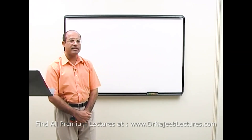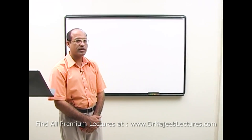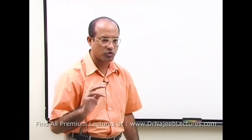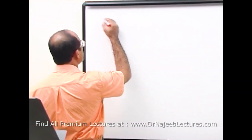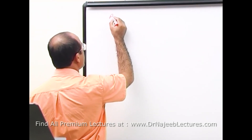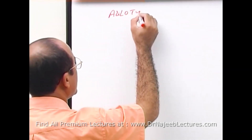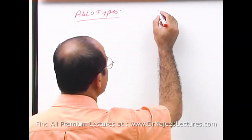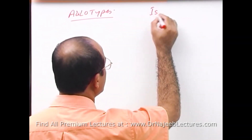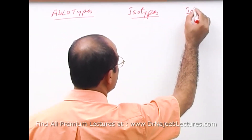Now, we will talk about another way to type the antibodies. Antibodies can be classified as idiotypes, allotypes, and isotypes.